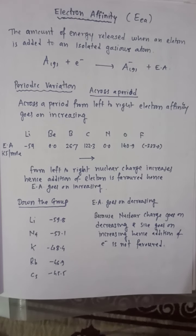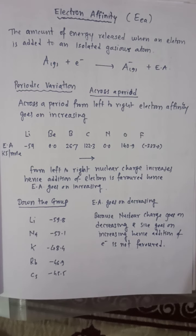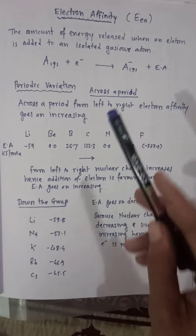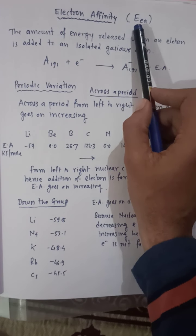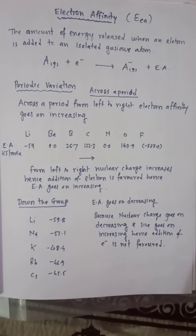Dear students, today we will discuss two important terms: electron affinity and electronegativity. We will start with electron affinity, which is also denoted by E or EA.